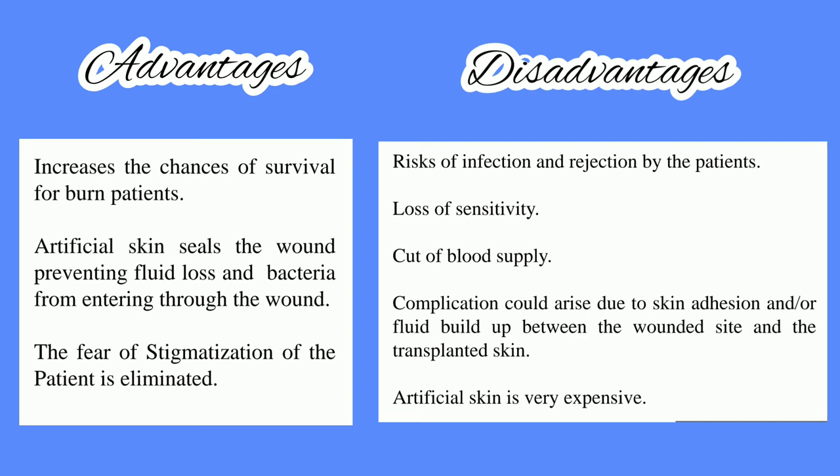Disadvantages include the risk of infection and rejection, especially with allografts or xenografts. There may also be loss of sensitivity or disruption of blood supply. While artificial skin prevents fluid loss, there is a condition where fluid builds up between the wounded site and the newly transplanted skin, leading to further complications. Additionally, artificial skin is very expensive, making it not an easily accessible approach.